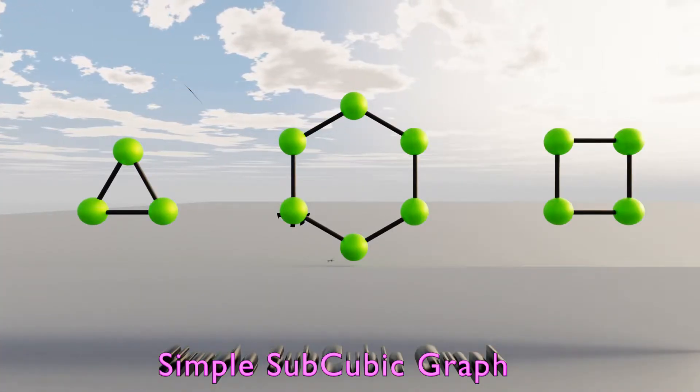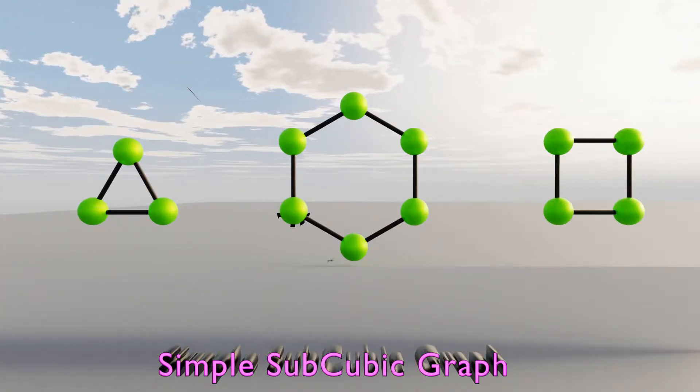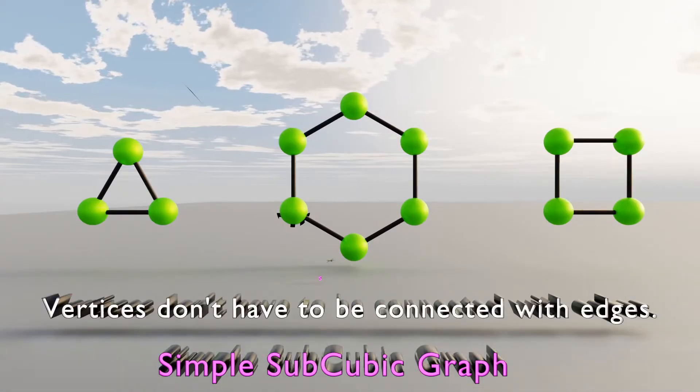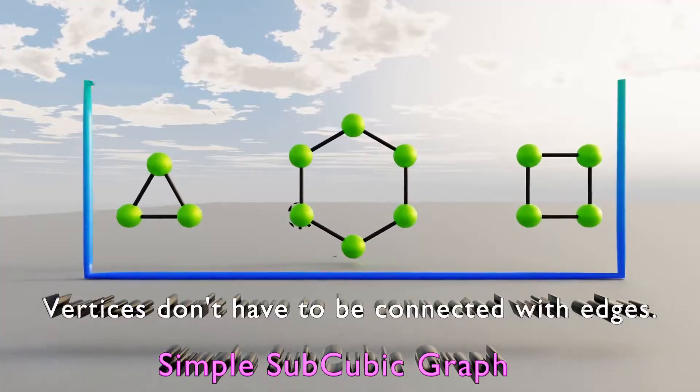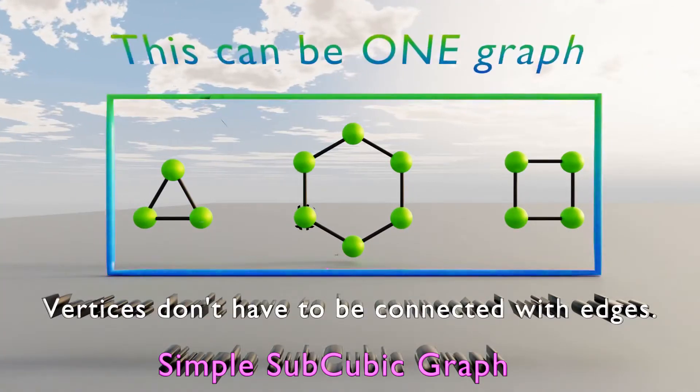One odd rule about simple subcubic graphs is that the vertices are not required to be connected. So that means that this whole thing can be one entire graph.